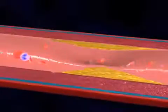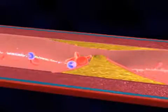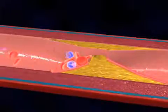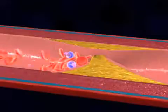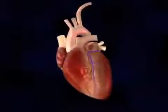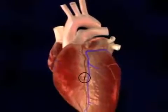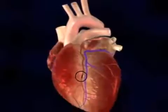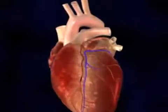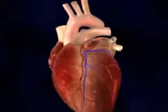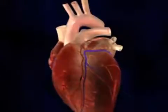Thrombosis forms when the surface of a plaque ruptures. When this occurs in the coronary artery, it results in a massive decrease or complete obstruction of blood supply to that part of the heart. This leads to the heart muscle, or myocardium, being starved of oxygen.